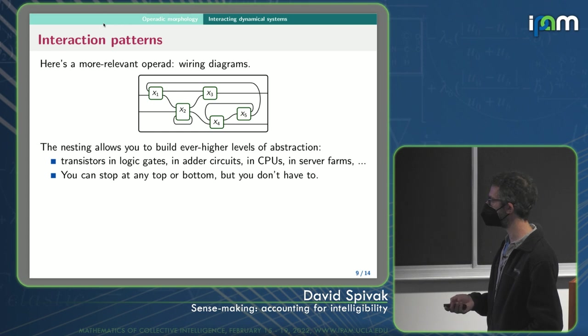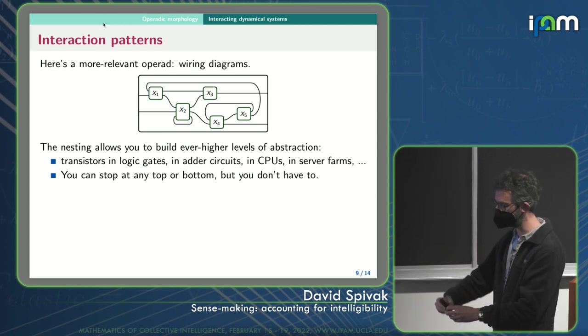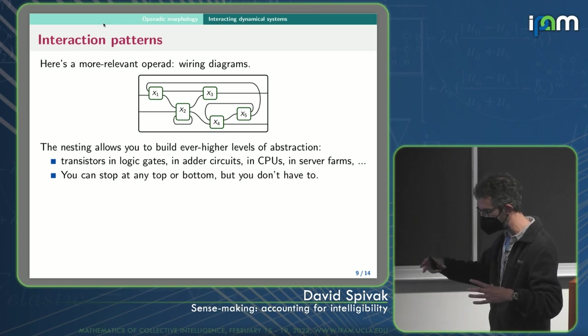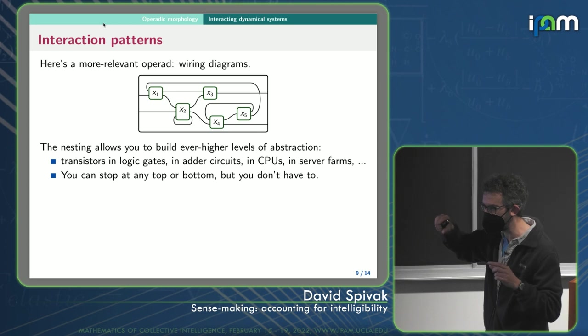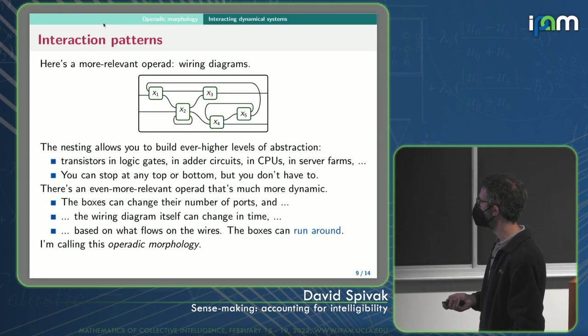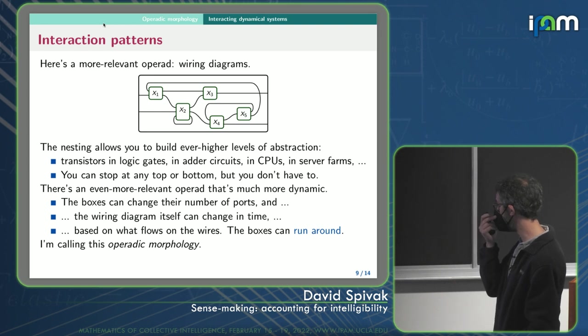The operad is just the rules for building new arrangements. So the ability to put within X3 a smaller wiring diagram. You want to just keep zooming in with your little phone. You zoom in, you see where the problem is. You kind of zoom out a little. That's what operads let you do.